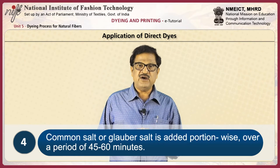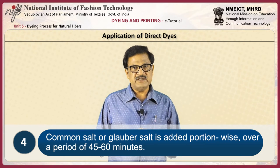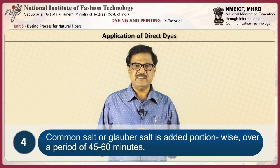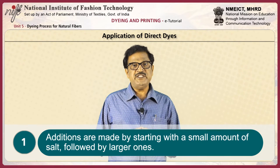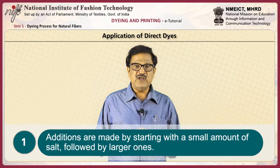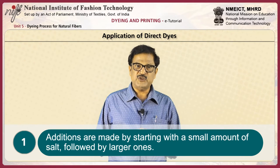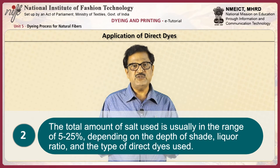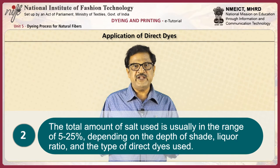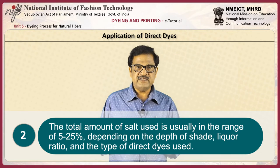Then common salt or glauber salt is added portion-wise over a period of 45 to 60 minutes while the temperature is slowly raised to the boiling temperature. Additions are made starting with a small amount followed by larger portions — for example, the salt is divided into four portions: one eighth, one eighth, one fourth, and half of the total amount. The total amount of salt is usually in the range of 5 to 25 grams depending on depth of shade, liquor ratio, and the type of direct dyes used.